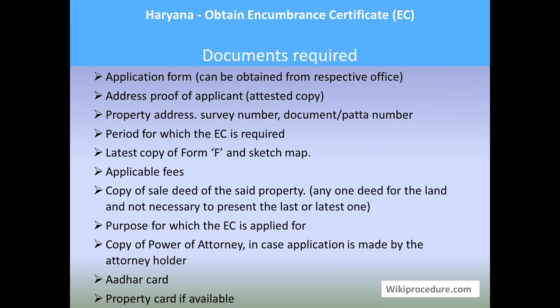Let us see the documents required. The application form can be obtained from the respective office. Address proof of the applicant — attested copy is required. Property address, survey number, document number, and patta number. Period for which the EC is required. Latest copy of Form F and sketch map. Applicable fees. Copy of sale deed of the said property — any one deed can be produced; it is not necessary to produce the latest one. Purpose for which the EC is applied for. Copy of power of attorney in case the application is made by an attorney holder. Aadhaar card. Property card if applicable. In case authorities require any additional documents, you have to provide them for smooth processing.